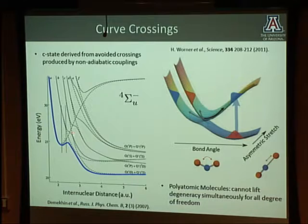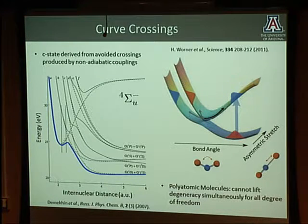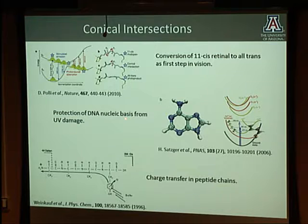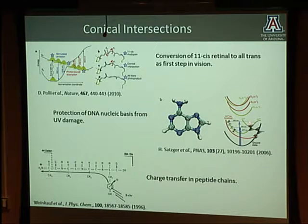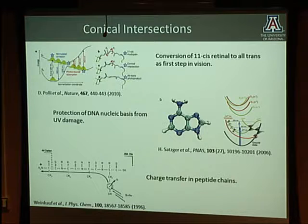In the case of a potential energy curve, you could re-diagonalize your Hamiltonian for same-symmetry electronic states to get avoided crossings. But in polyatomics, you may not be able to lift the degeneracy completely, so you get conical intersections where two surfaces intersect. These conical intersections are important in chemistry and biochemistry. Vision, for instance, starts with photon excitation converting to structural change in a chromophore, and DNA protection is another example—electronic energy is dissipated through conical intersections, preventing DNA damage. These are non-radiative means of giving away energy without fragmenting.